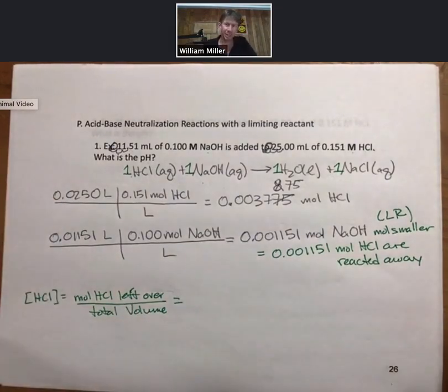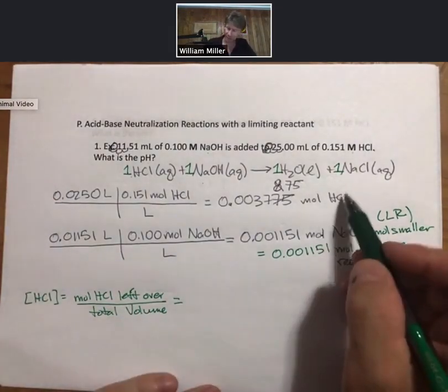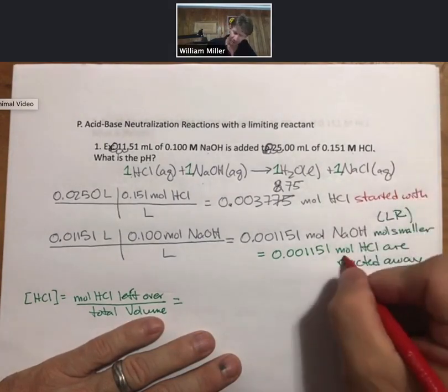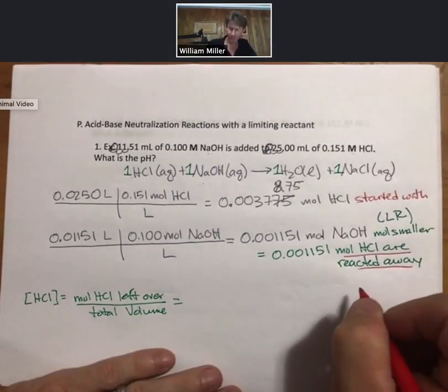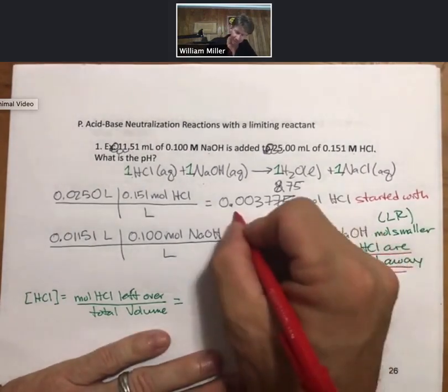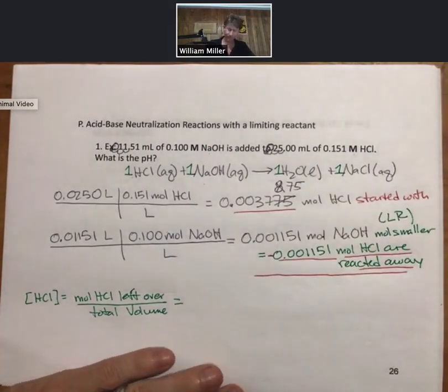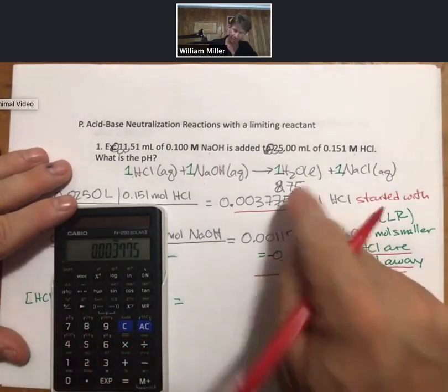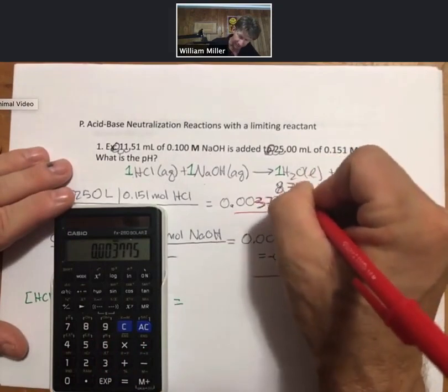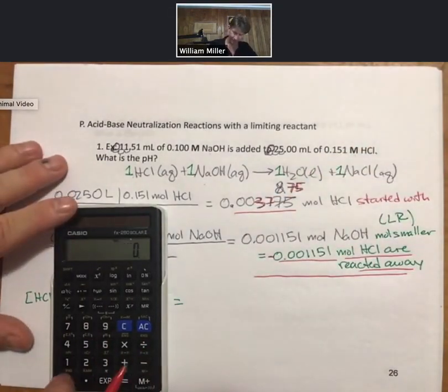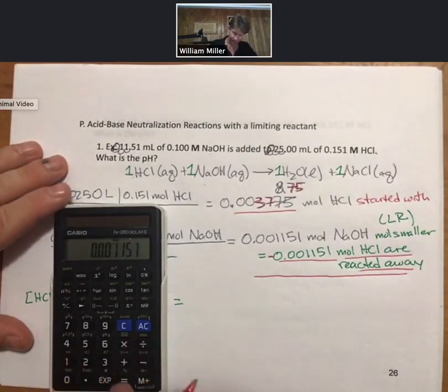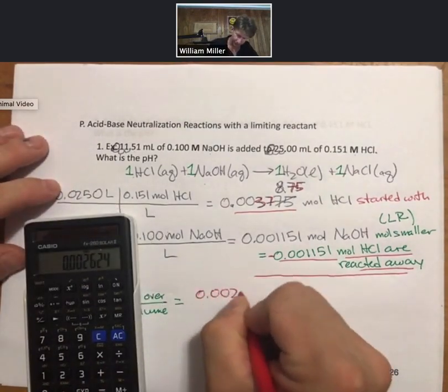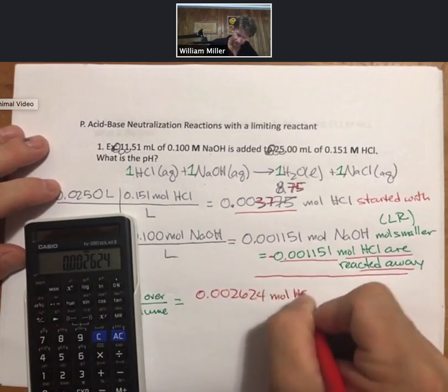Let's work on our moles of HCl left over. We know how many moles of HCl we started with. We know how many moles of HCl were reacted away. To find the moles of HCl that are left, subtract these two numbers. I'm going to use this whole number here, 0.003775 minus 0.001151, and I get 0.002624 left over.